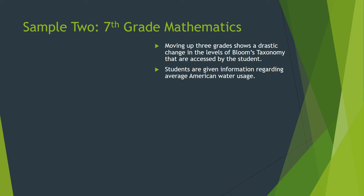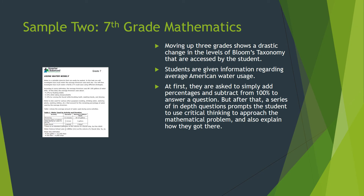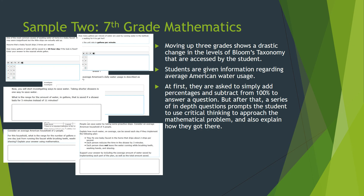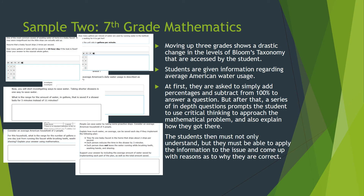Looking at a seventh grade mathematics sample, moving up three grades shows a drastic change in the levels of Bloom's Taxonomy accessed by the student. Students are given information regarding average American water usage. At first, the task is simply to add percentages and subtract from 100% to answer a question about how water services are allocated in the United States. But after that, a series of in-depth questions prompts students to use critical thinking and explain how they arrived at answers for each different scenario, reaching into the upper tiers of Bloom's new taxonomy.